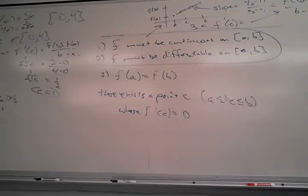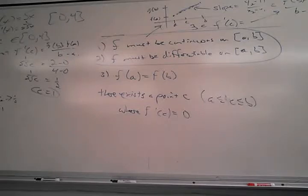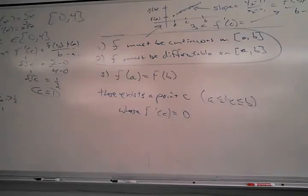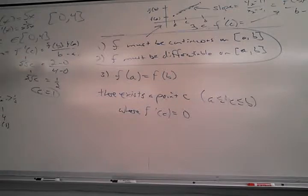That's the actual work involved with this theorem. The mean value theorem is used to prove so many other future theorems — it comes up all the time. C is just somewhere in the middle where what happens? The tangent line at that point is parallel to the line through the endpoints. C will always be the point where the tangent line is parallel to the secant line through the endpoints.